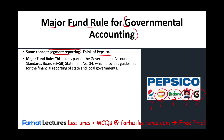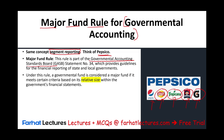The same concept applies to major funds. This rule is part of the Governmental Accounting Standards Board, GASB number 34, which provides guidelines for reporting of state and local government. Under this rule, a governmental fund is considered a major fund if it meets certain criteria, and it will need to be reported separately based on its relative size within the governmental financial statements.